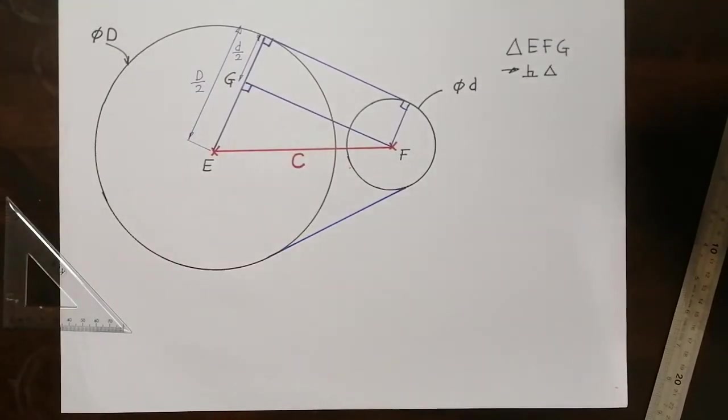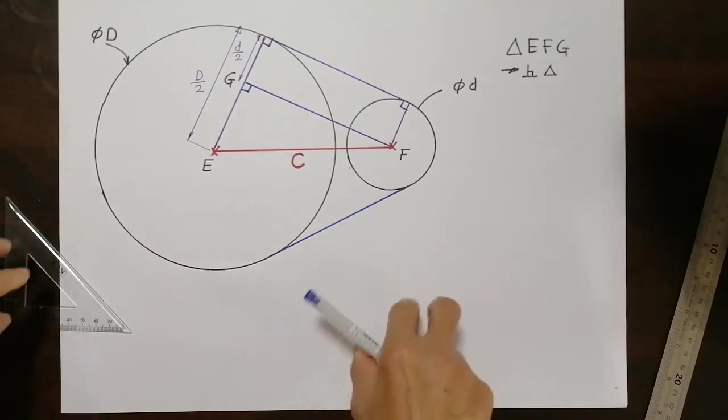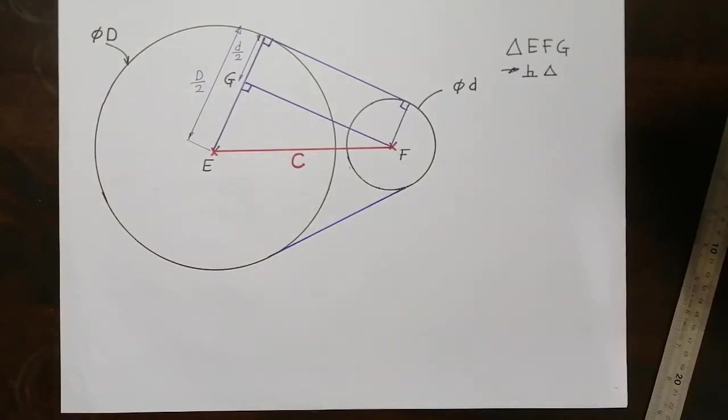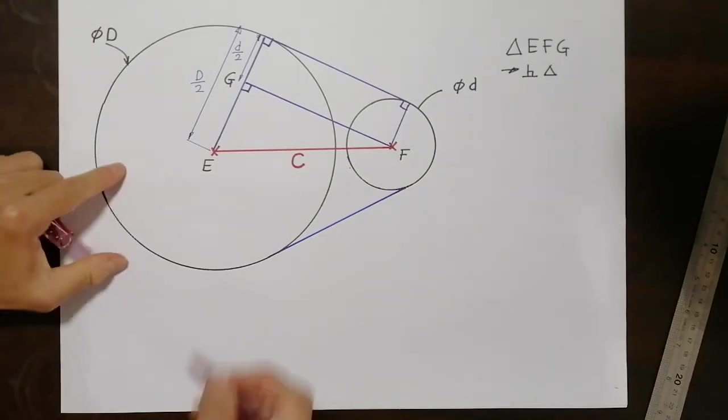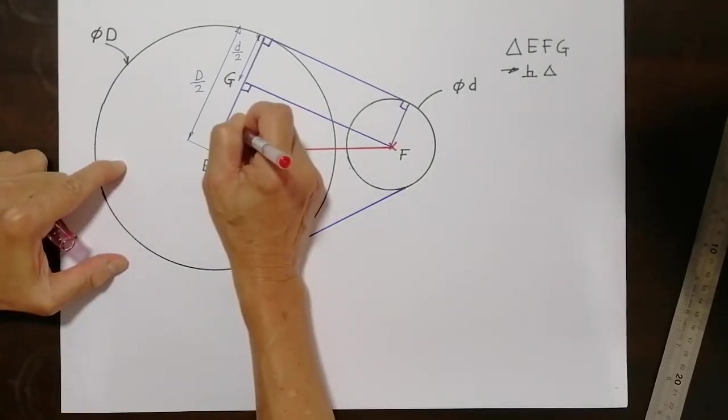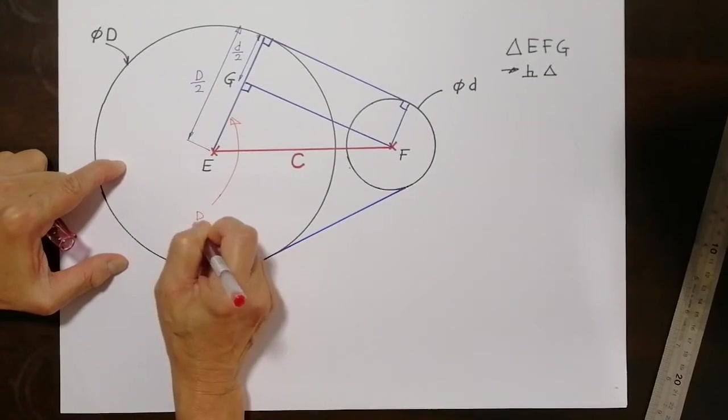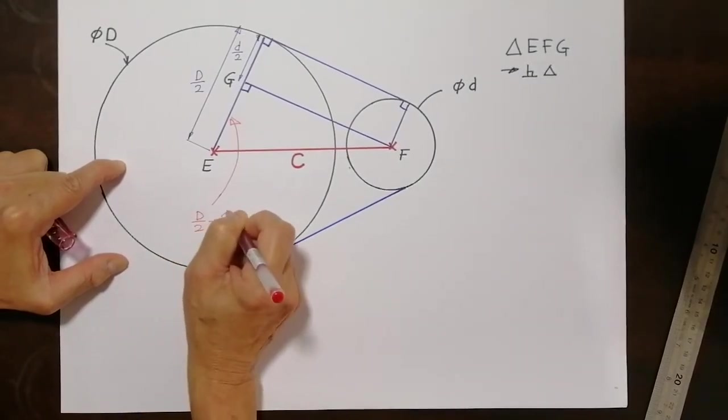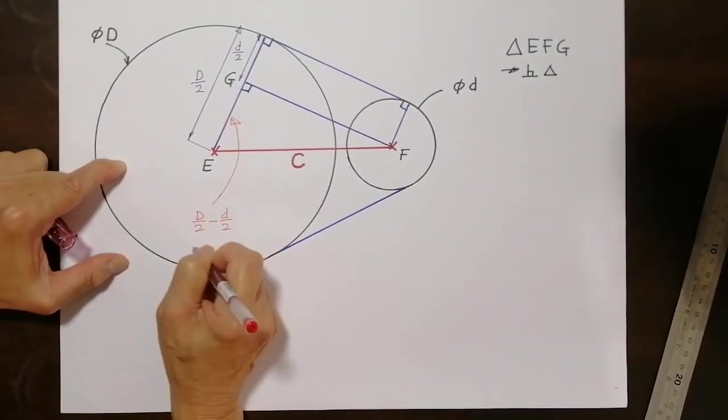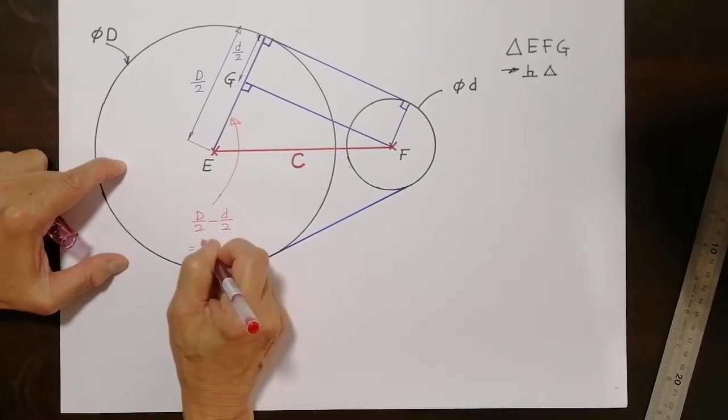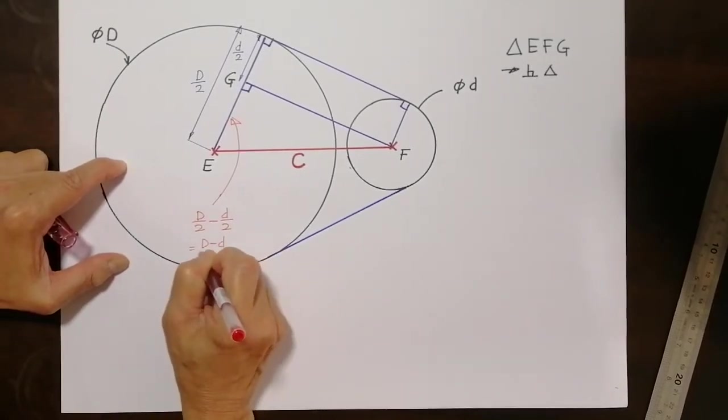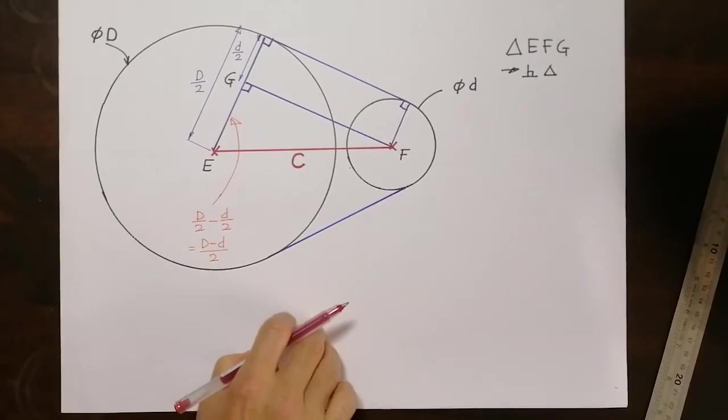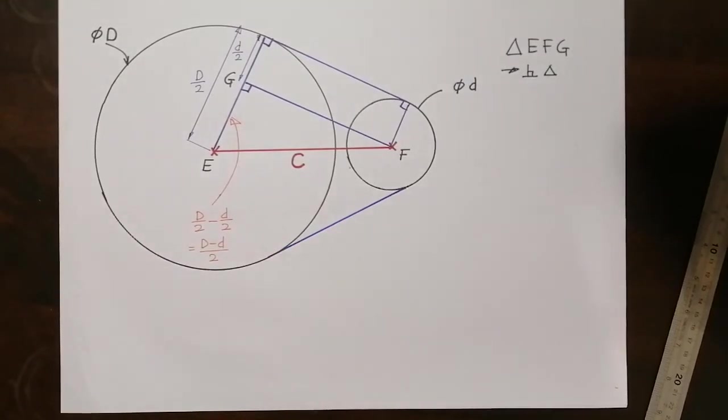So I'm interested in the side that belongs to the triangle. This distance will be D over two subtract small letter d over two. I can write it as (D - d) over two divided by two. So basically that is the distance over there.